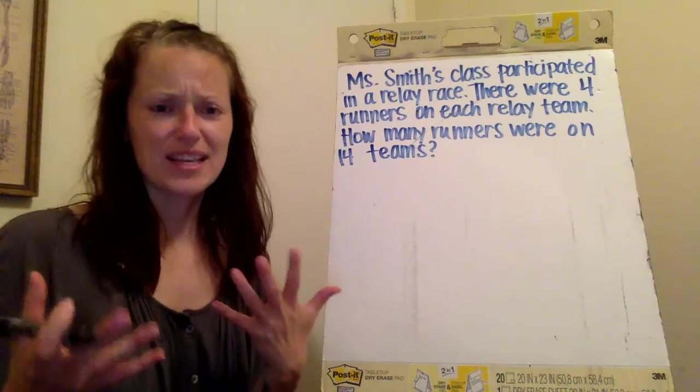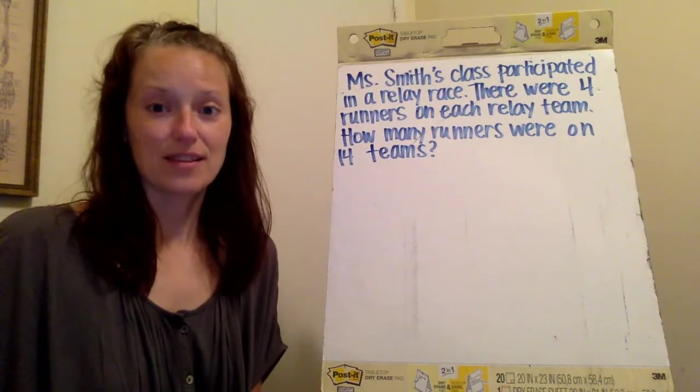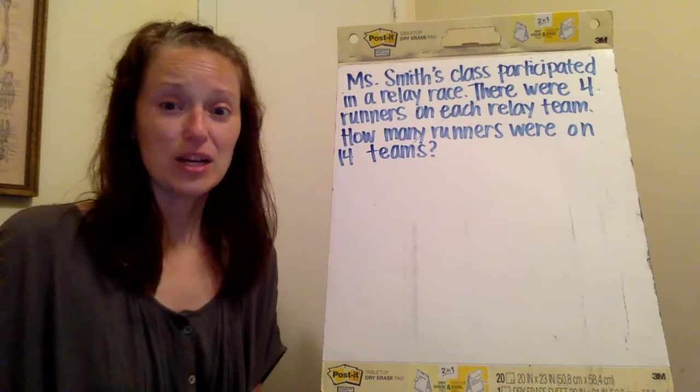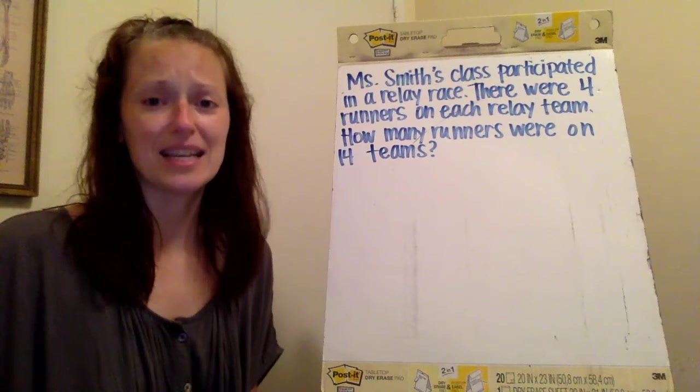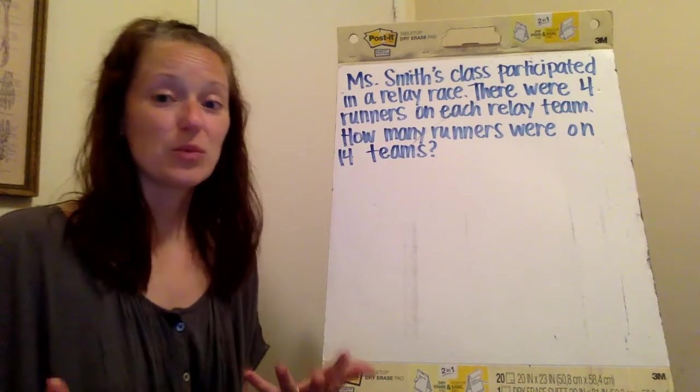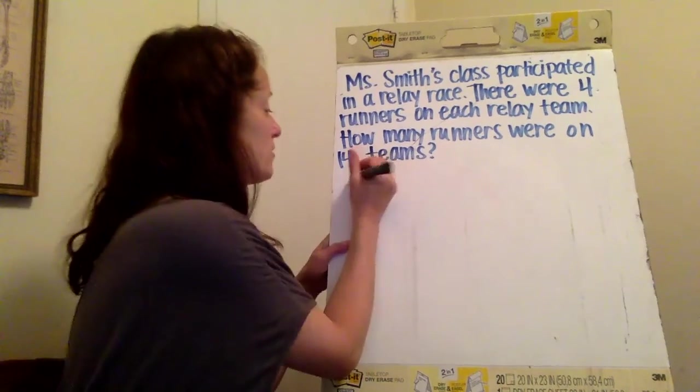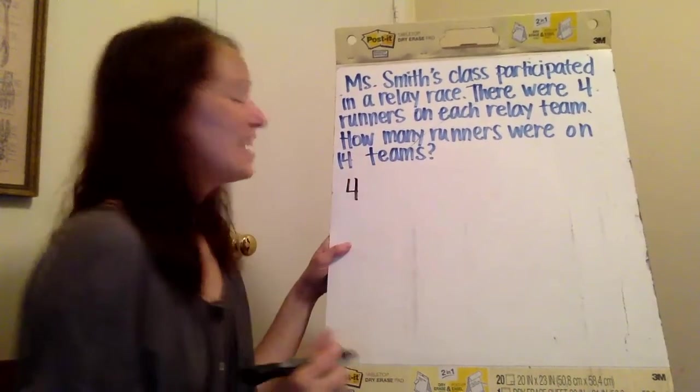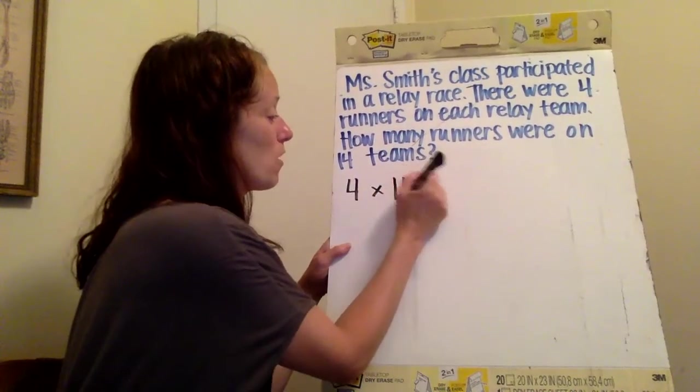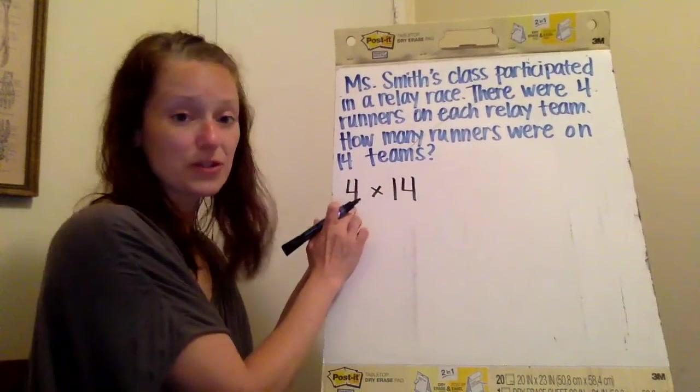So I want to first think, well what equation could we write for this? So we know that we're working on a multiplication problem here. So there were four runners on each relay team. How many runners were on 14 teams? So we know that there were four runners and there are 14 teams. So we need to know how many runners are there all together on each team.